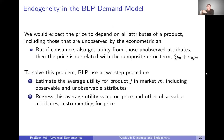The issue here is that we expect price to depend on all attributes of a product, including those unobserved by the econometrician. But if consumers also get utility from those unobserved attributes, then price is correlated with Xi, our error term, and so price is endogenous in this model. In order to solve this problem, BLP use a two-step procedure. First, they estimate the average utility for product J in market M, including observable and unobservable attributes. Then they regress that average utility on price and observable attributes, instrumenting for price.